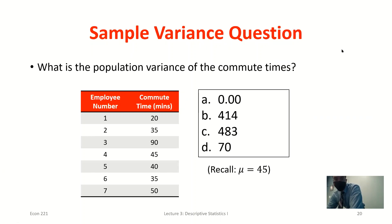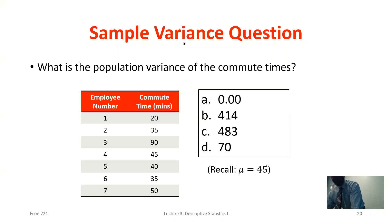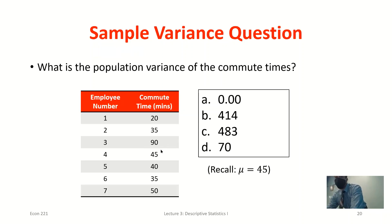Let's say we have this data set — and actually, we're going to treat it as a population data set. We looked at it with the means last class; it's commute time. I want to find the population variance for this commute time. As a reminder, the steps are: first, I need the mean. We already found that last class — the mean was 45.